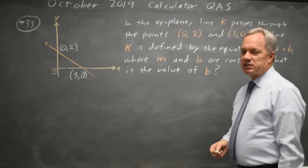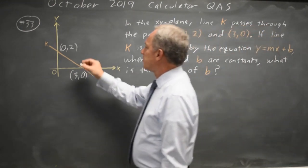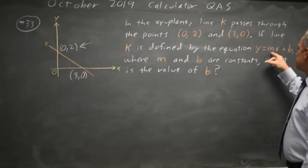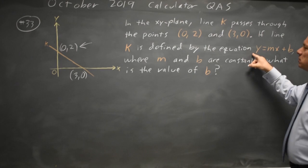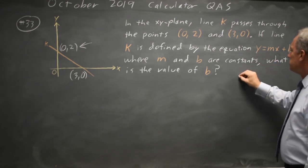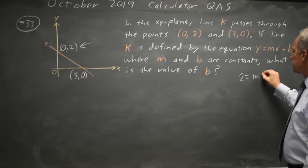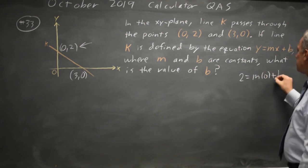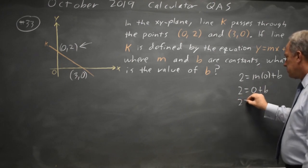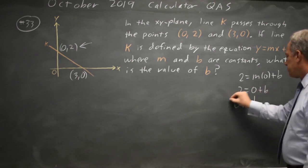The easiest way to find this is that it's already given right here. When x equals zero, the y value 2 equals m times zero plus b, so 2 equals b. The answer would be 2.